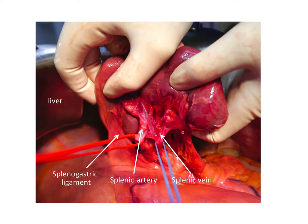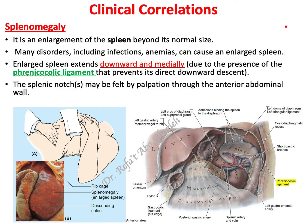Here you can see the spleen, the splenic vein, and the splenic artery — both located within the splenorenal ligament. Now let me show you some clinical correlations related to the spleen as we talk about its anatomy.